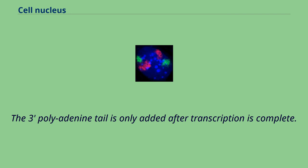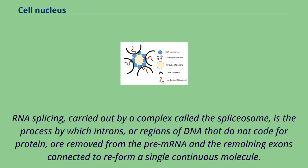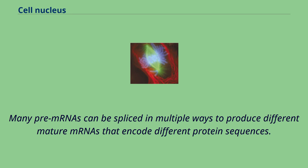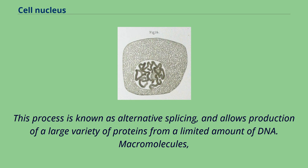RNA splicing, carried out by a complex called the spliceosome, is the process by which introns — regions of DNA that do not code for protein — are removed from the pre-mRNA and the remaining exons connected to re-form a single continuous molecule. This process normally occurs after 5'-capping and 3'-polyadenylation, but can begin before synthesis is complete in transcripts with many exons. Many pre-mRNAs can be spliced in multiple ways to produce different mature mRNAs that encode different protein sequences. This process is known as alternative splicing and allows production of a large variety of proteins from a limited amount of DNA.